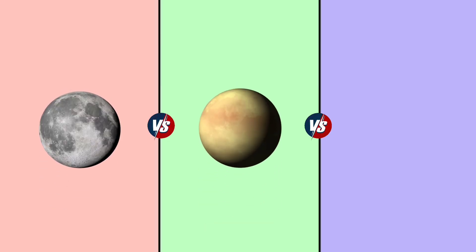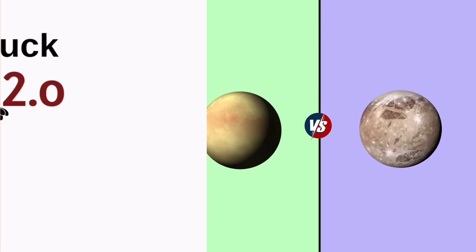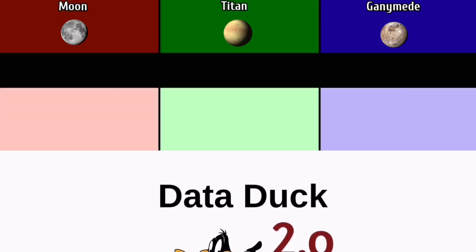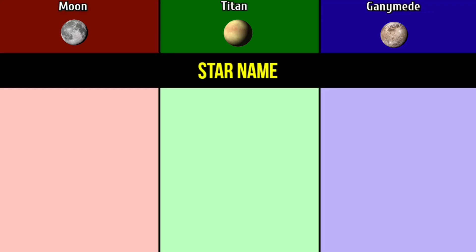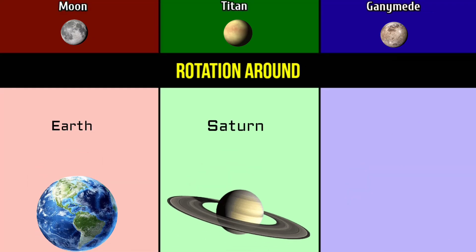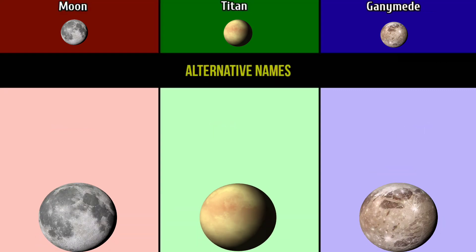Hello guys. Today we see Moon versus Titan versus Ganymede. Welcome to our YouTube channel Data Duck 2.0. The star name is Sun for all. Rotation around Earth, Saturn, Jupiter.